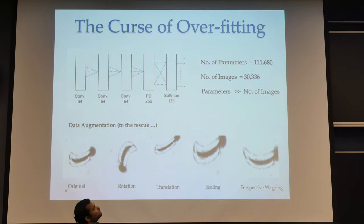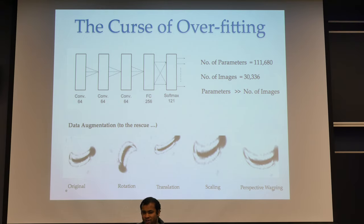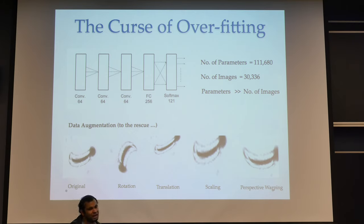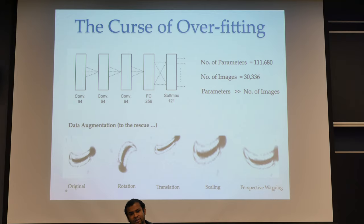CNNs have performed well on image classification, so we decided to use them for our problem. But the problem with CNNs is they have a large number of parameters. For example, this simple three-layered convolutional neural network has more than 100,000 parameters, but we just have 30,000 training images. So to reduce overfitting, we use data augmentation.